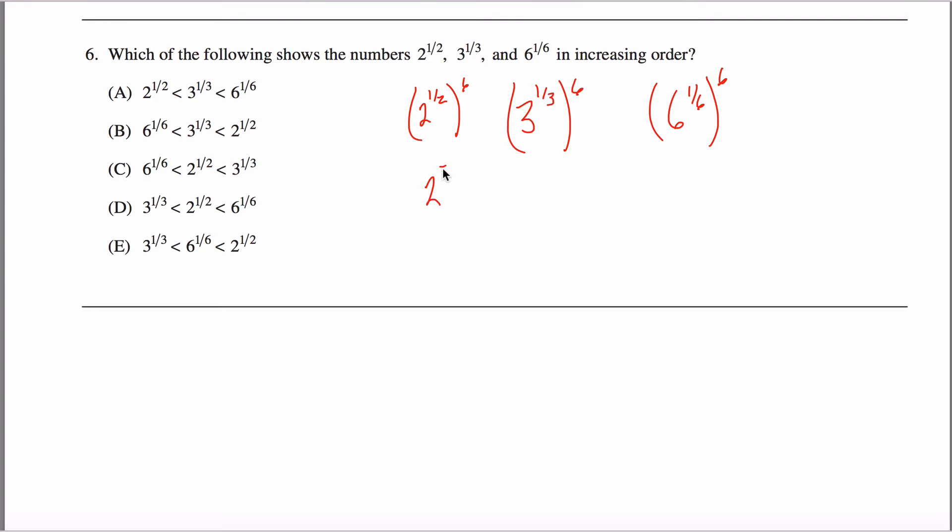So this guy right here is really two to the six-halves, a.k.a. two cubed. And this guy is three to the sixth-thirds, a.k.a. three squared. And this guy is six to the six-sixths, so six to the first power. So now I just got to order these guys.